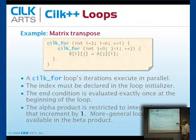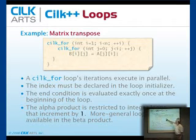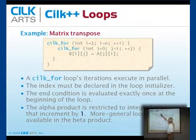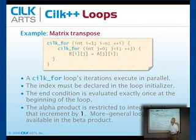One of the requirements is that the index be declared in the loop initializer. So you cannot declare I out in front and then use it — you must declare I to be used within the loop itself.